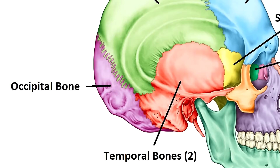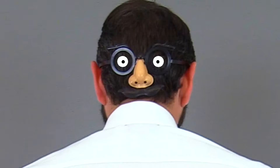Next we have the occipital bone. The word occipital literally means 'behind the head' and it covers the occipital lobe of the brain, which processes visual images. It doesn't make sense to a lot of people that we have eyes on the front of our head but the part of our brain that processes visual images is on the back — but as the instructor jokes, he has eyes on the back of his head. Okay, we are done with the cranial bones.